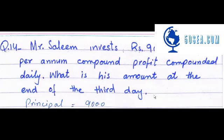Assalamu alaikum, this is Sayyid Muhammad As-Sanusi from mathHImath. Let's start with question number 14 of exercise 4.2. The question states: Mr. Saleem invests Rs. 9,000 at 2% per annum compound profit compounded daily. What is his amount at the end of the third day?